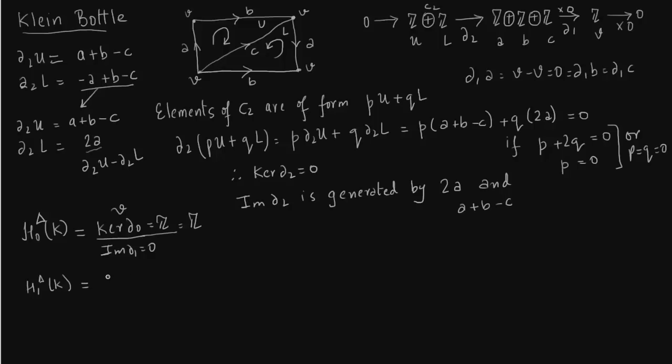H1 is kernel of delta 1 over image of delta 2. So kernel of delta 1 is generated by A, B and C. And image of delta 2 we know it is generated by 2A and A plus B minus C.